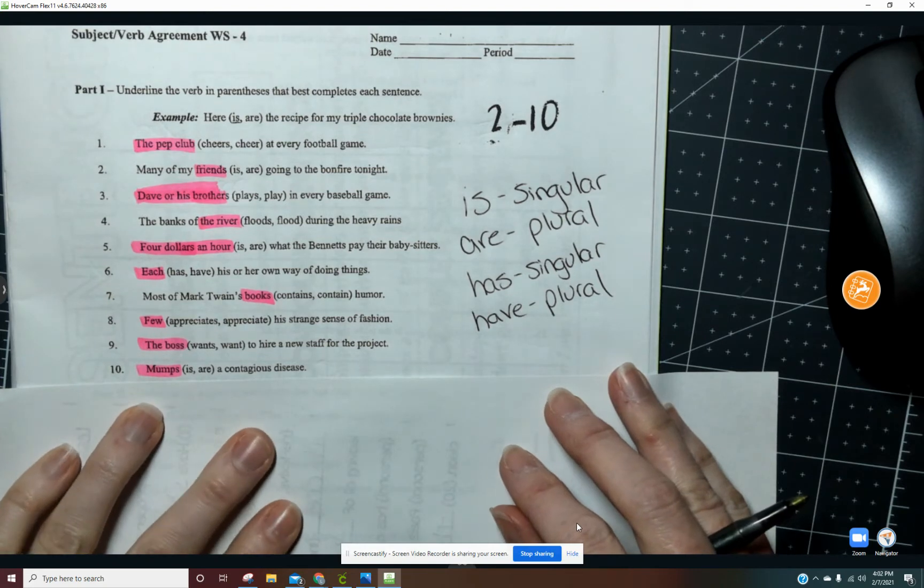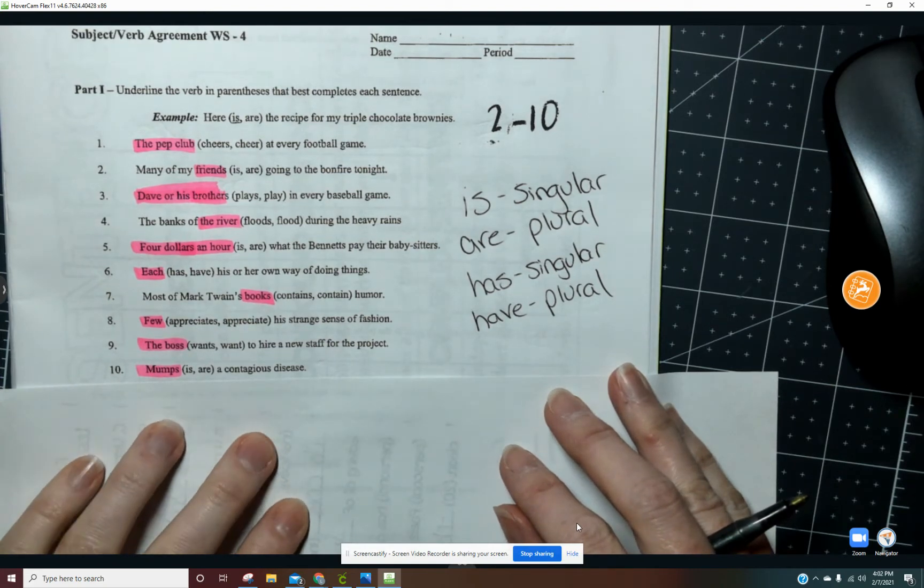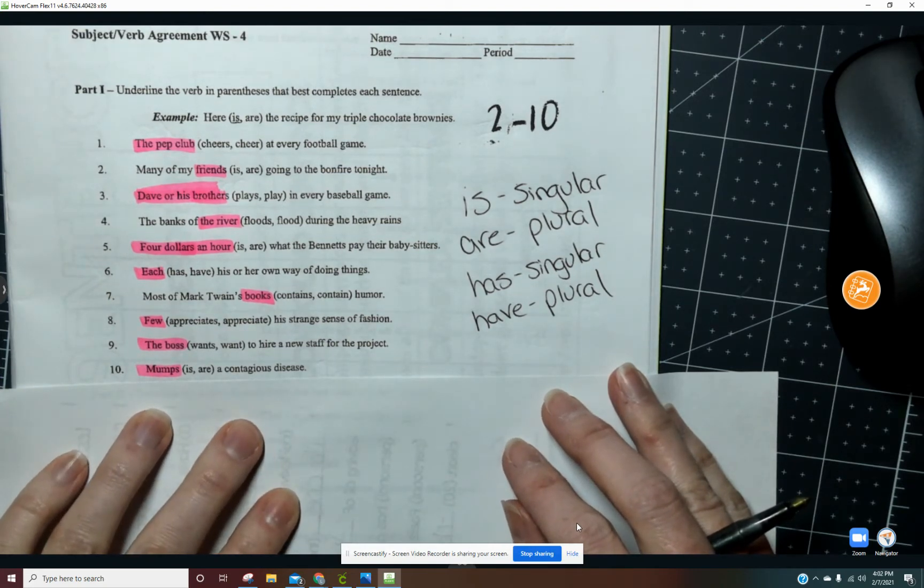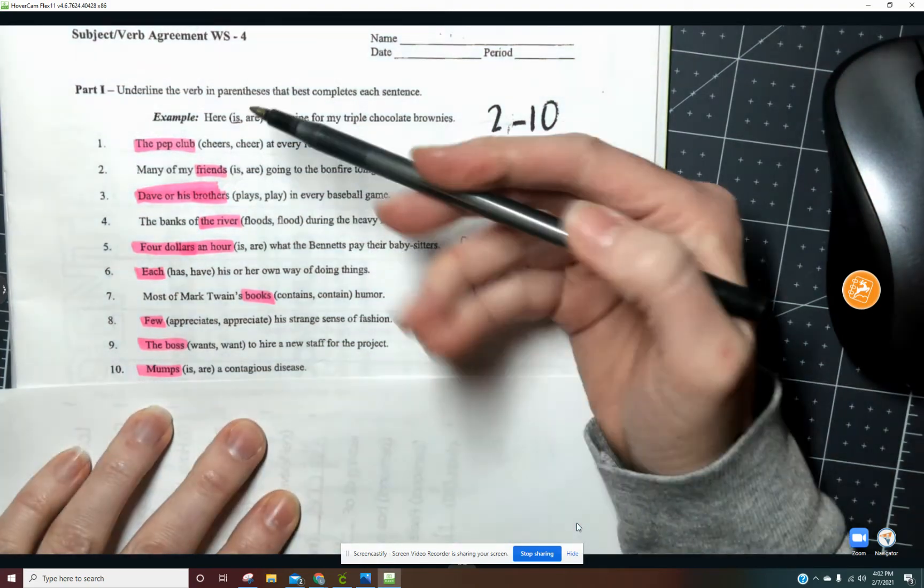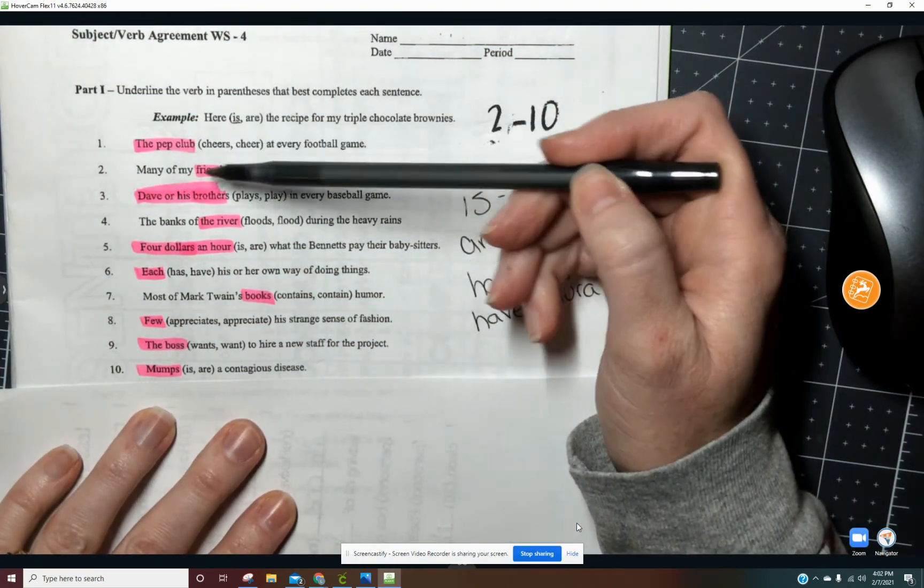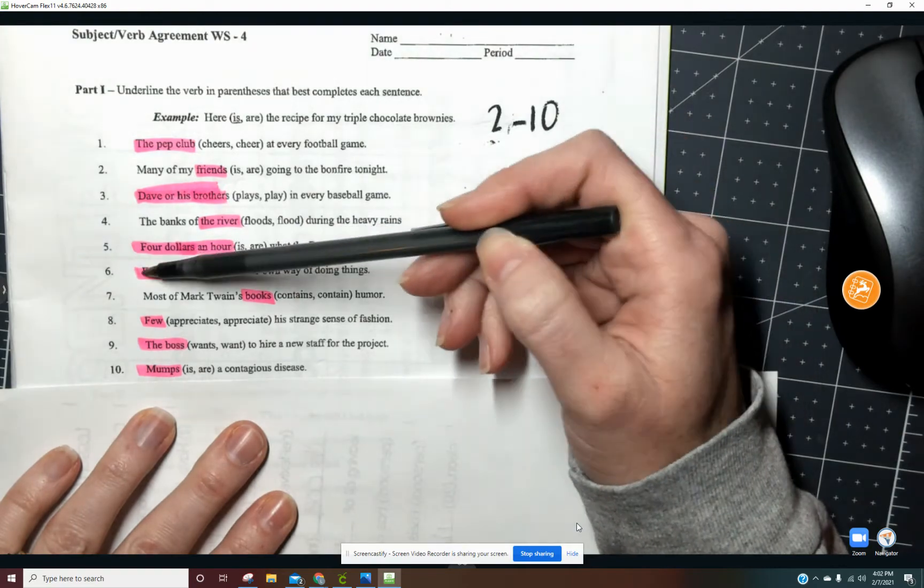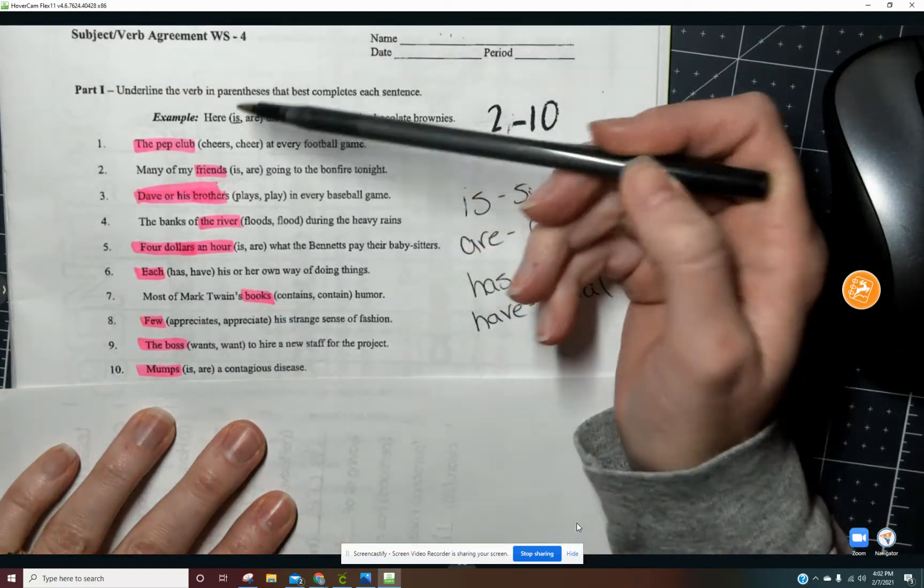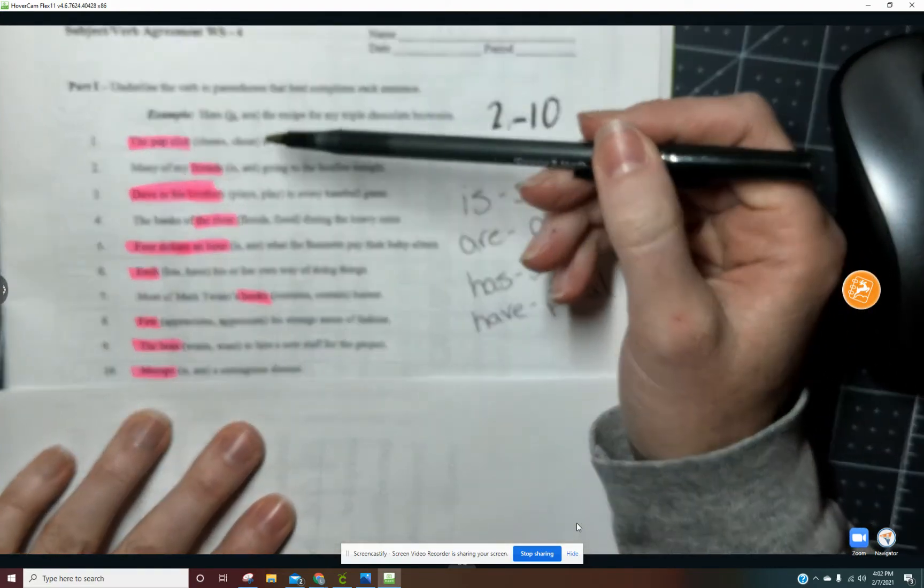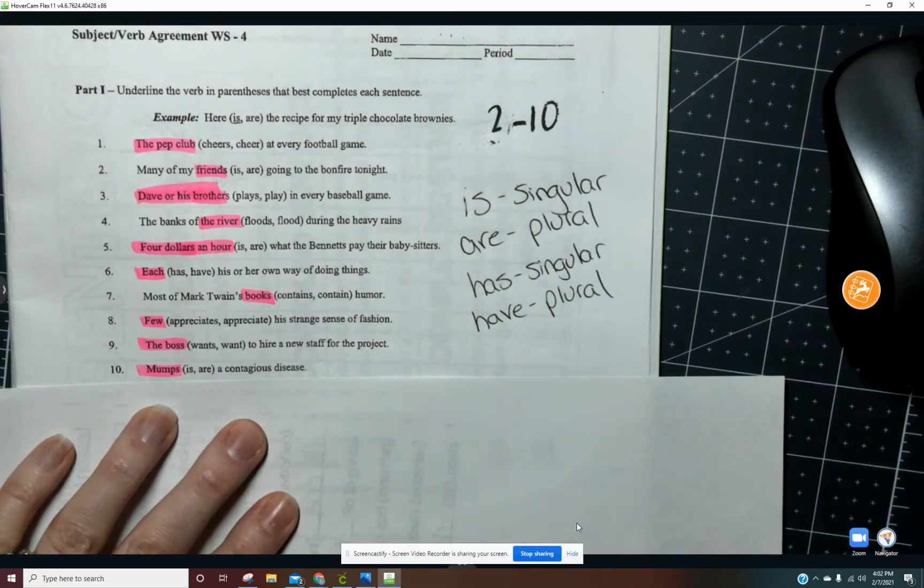It says underline the verb in parentheses that best completes each sentence. So I've gone through and I've highlighted the subject of our sentence to help us then understand if our verb needs to have an S or not.